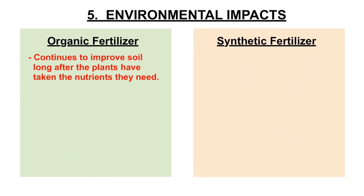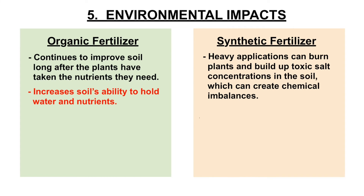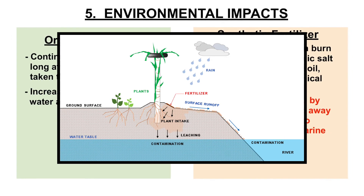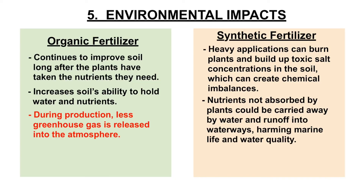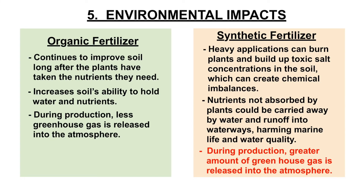5. Environmental Impacts. Among the other benefits of organic fertilizers is its ability to improve the quality of soil over time. While heavy applications of synthetic fertilizers can burn plants and build up toxic salt concentrations which can create chemical imbalances in the soil, organic fertilizers contain matter that increases the soil's ability to hold water and nutrients. On the contrary, synthetic fertilizers could easily be carried away by rainwater and run off into waterways, causing harm to marine life and water quality. Less greenhouse gas is released during production of organic fertilizers, while production of synthetic fertilizers entails releasing a greater amount of greenhouse gas into the atmosphere.